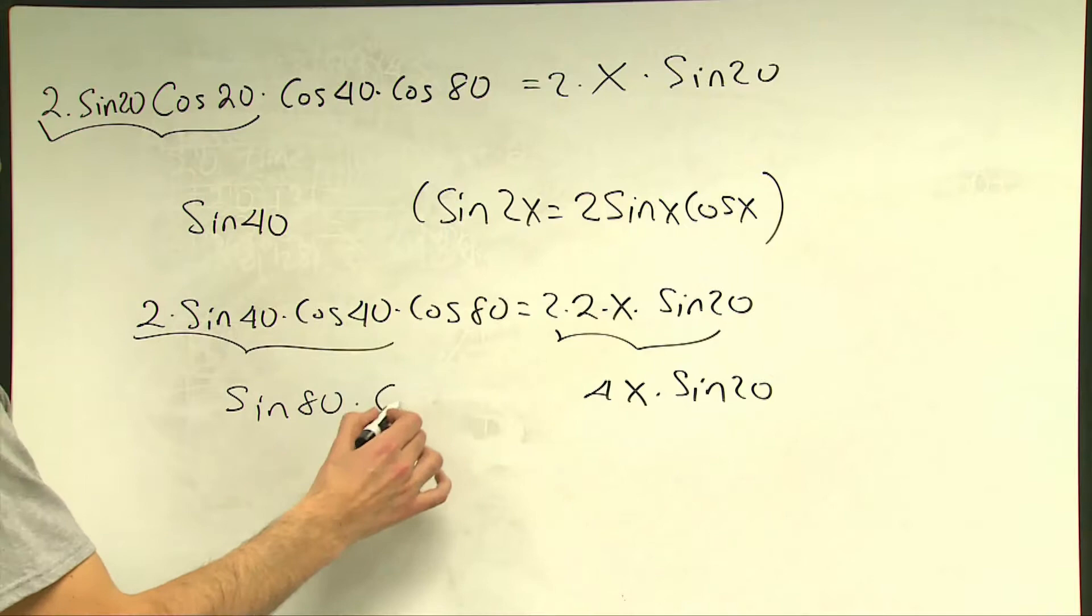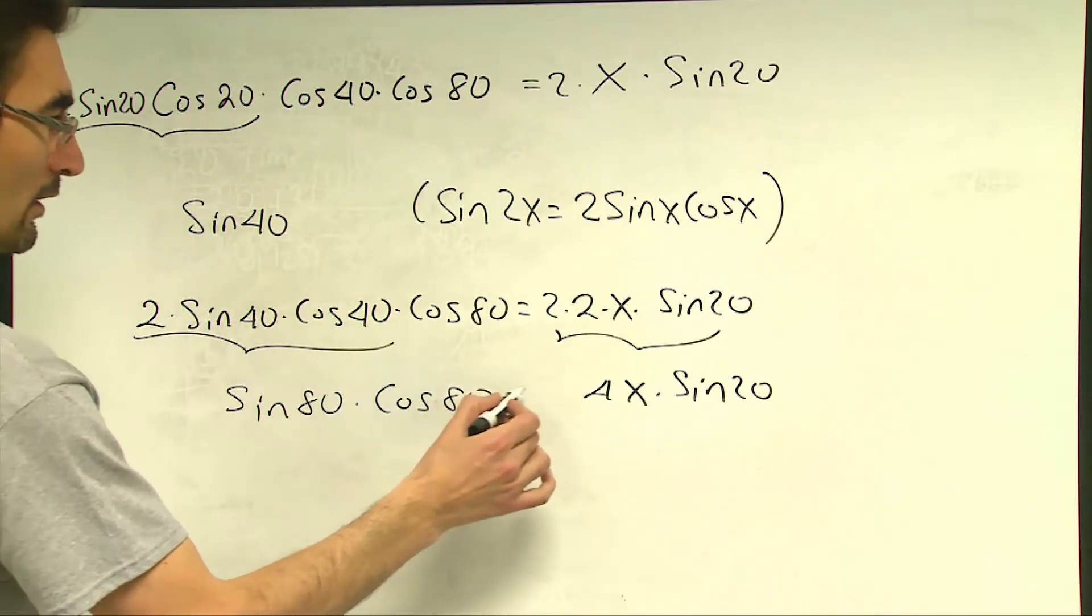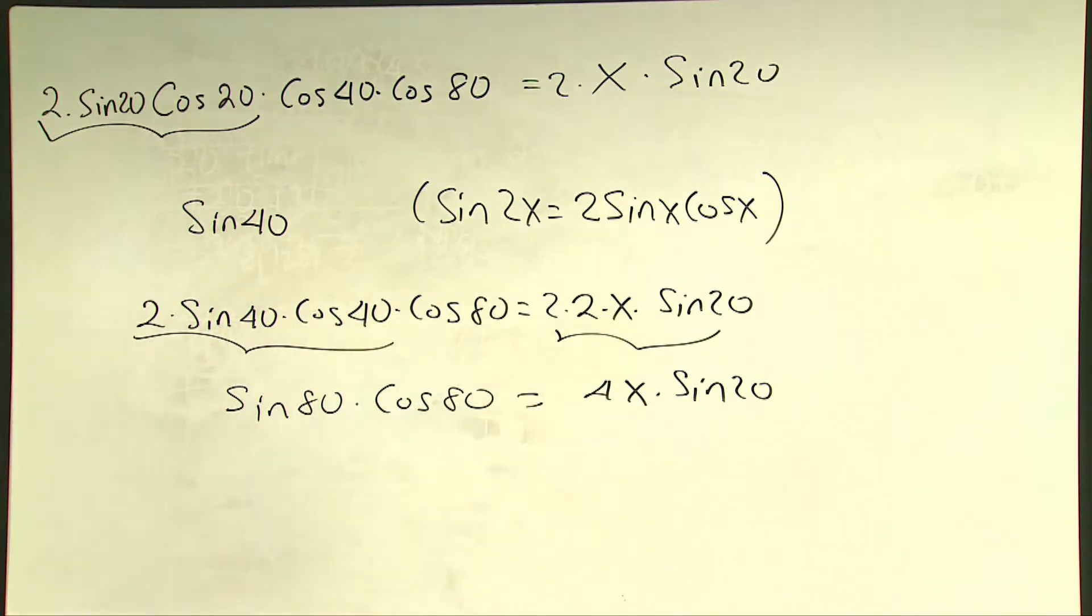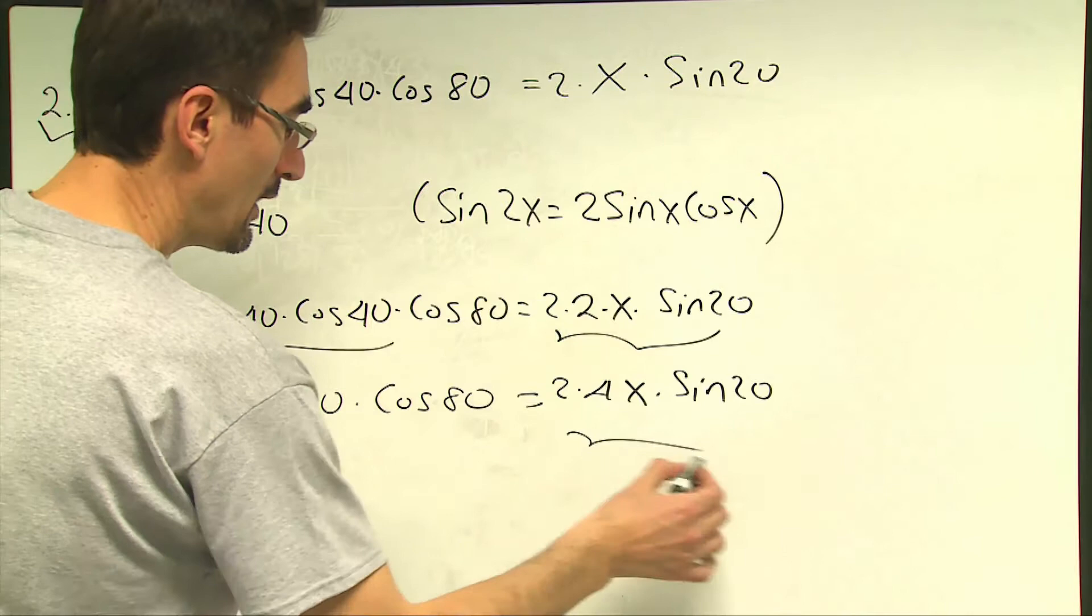And then the rest will be cosine 80 equals 4x times sine 20. Finally, I will do the same structure, same implementation again, multiplying both sides by 2.